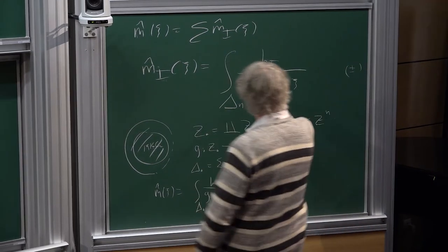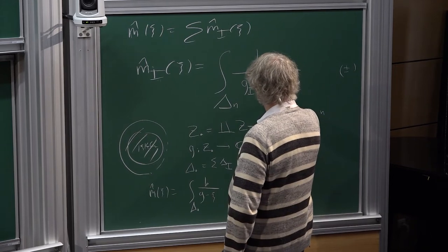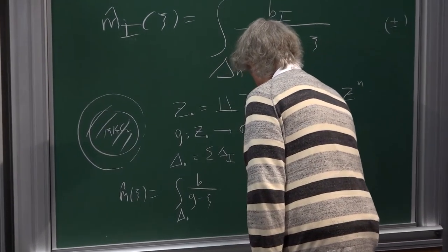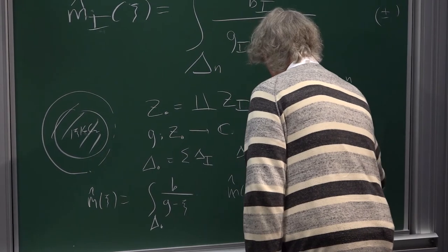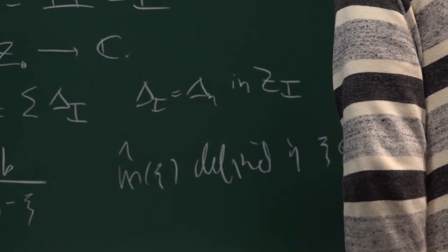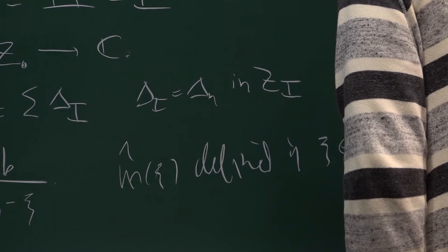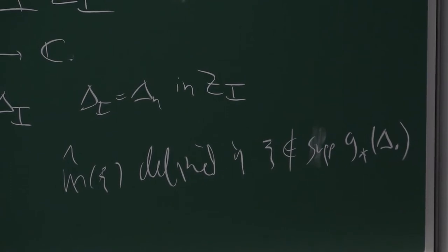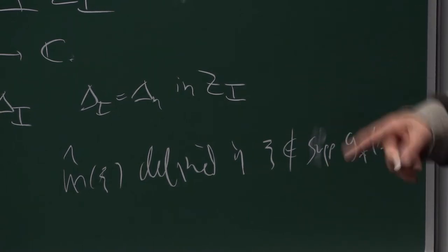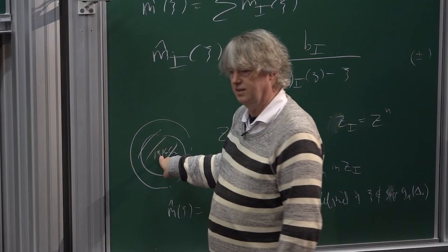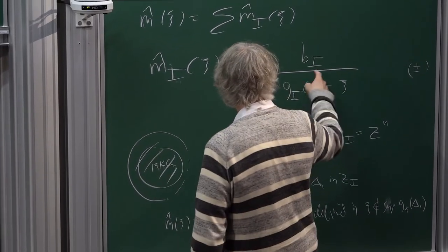M-hat of C is well defined if C is not in the support of the pushforward of delta-dot under G. This support is compact — all these cycles have the property that G of the cycle is supported inside a disk. So if we take a value of C which is not in this disk, then this integral is just well defined. The reason this may be confusing is that we're not talking about irregular singularities here.